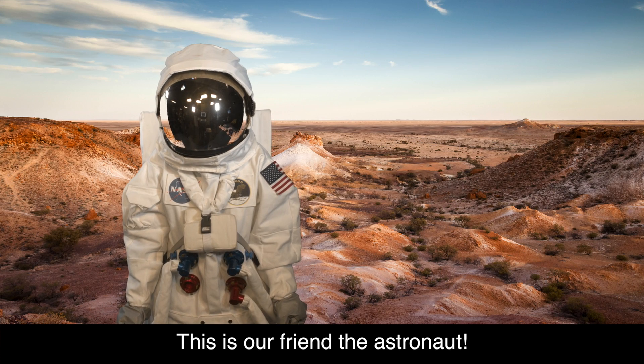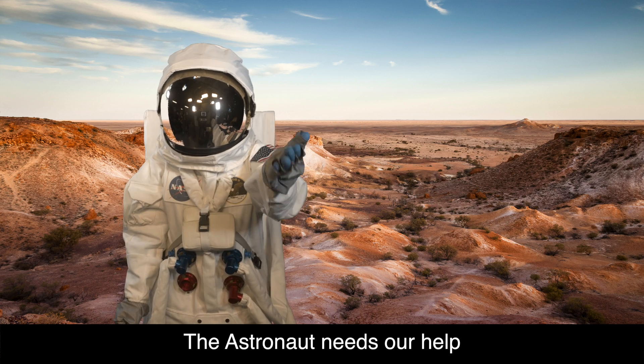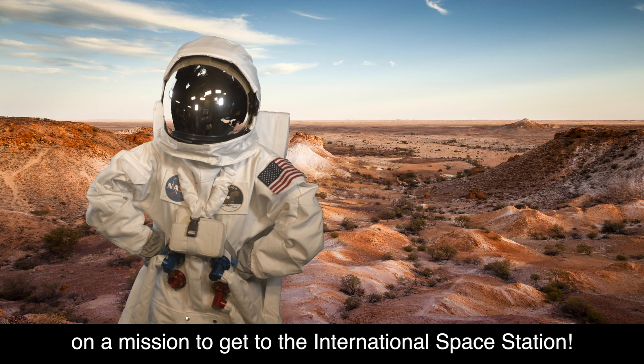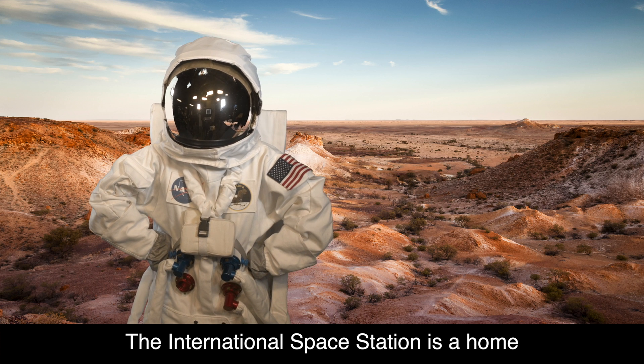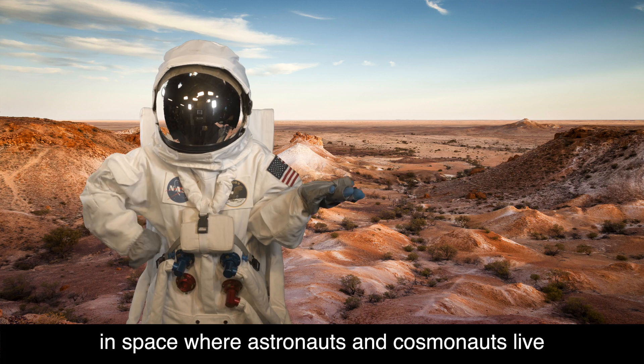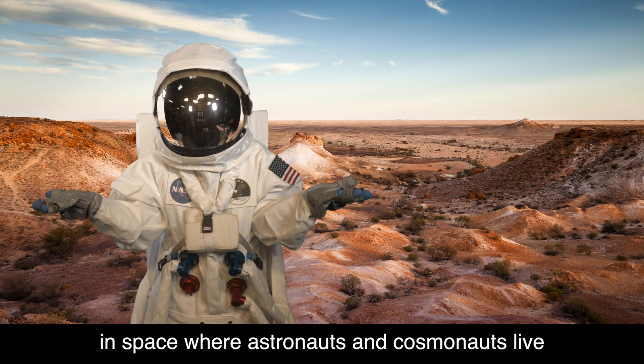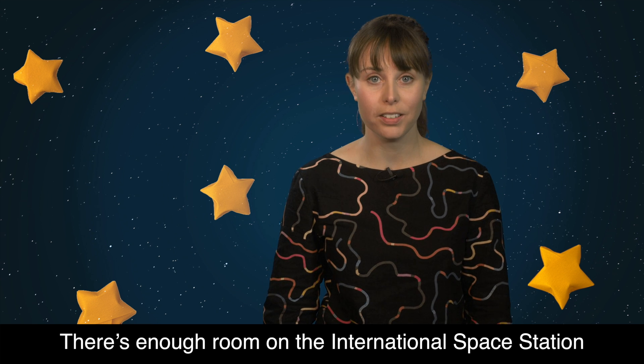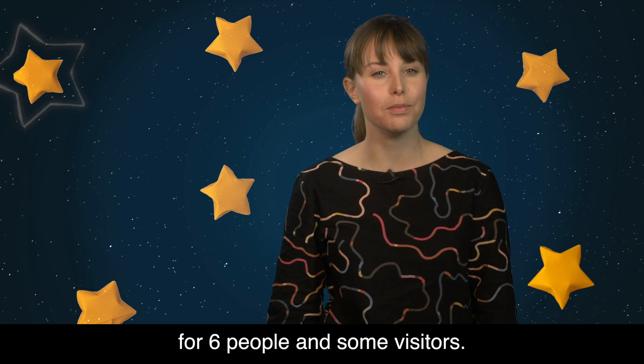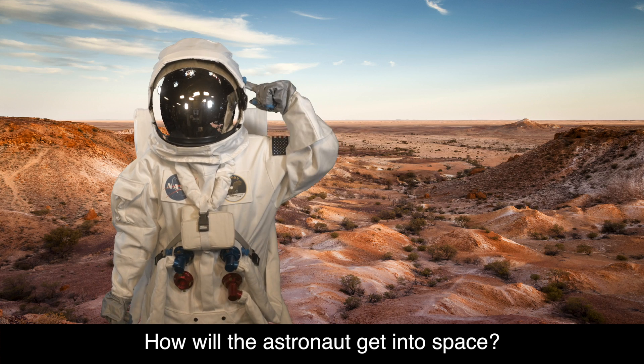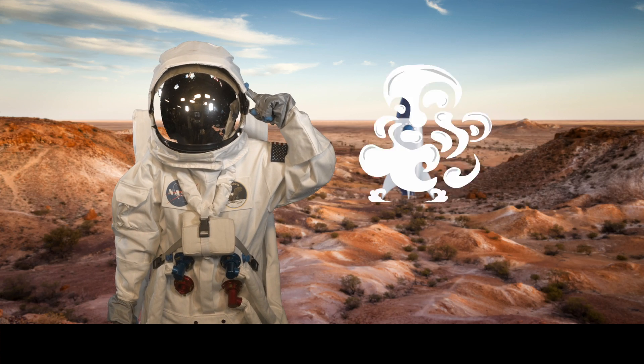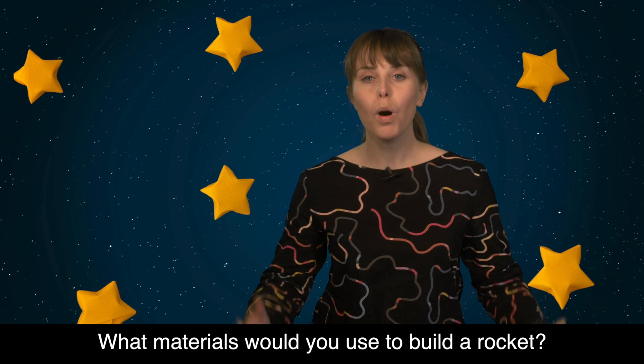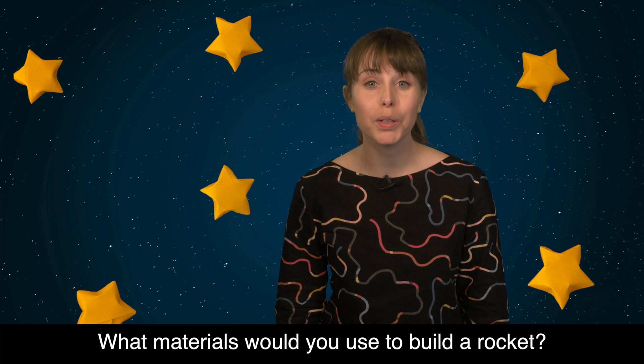This is our friend the astronaut. The astronaut needs our help on a mission to get to the International Space Station. The International Space Station is a home in space where astronauts and cosmonauts live and do experiments. There's enough room on the International Space Station for six people and some visitors. How will the astronaut get into space? In a rocket.